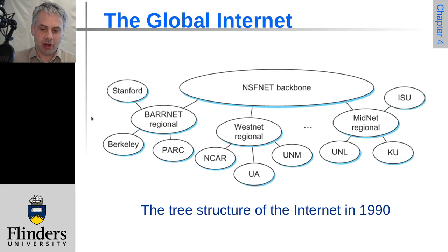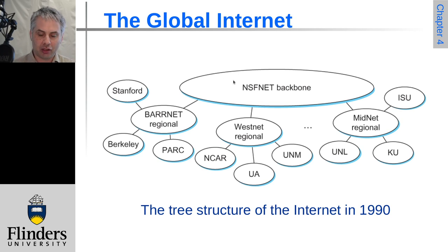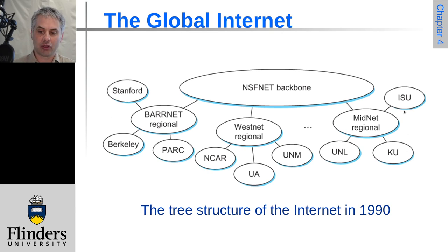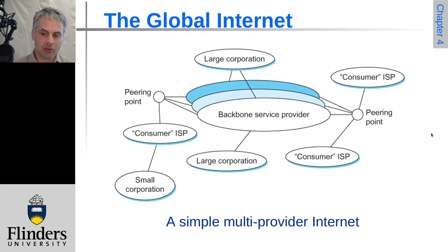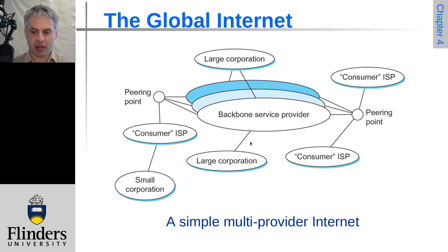If we go right back to about 1990, this is basically what the internet looked like. There was the National Science Foundation in the United States with their network backbone, and then three regional hubs that went out to individual universities and institutes. It was really quite small and quite manageable. As it's grown, we now have a larger backbone and things have got more sophisticated.